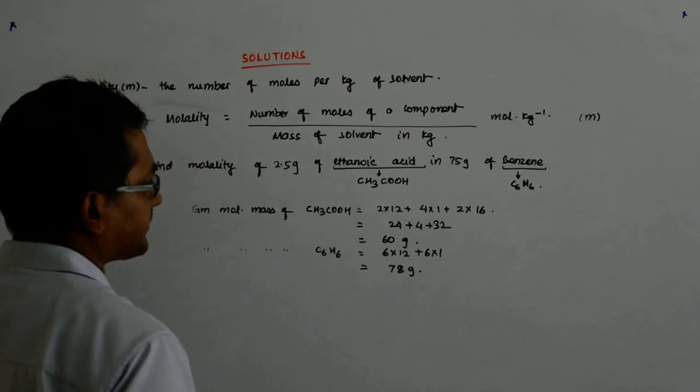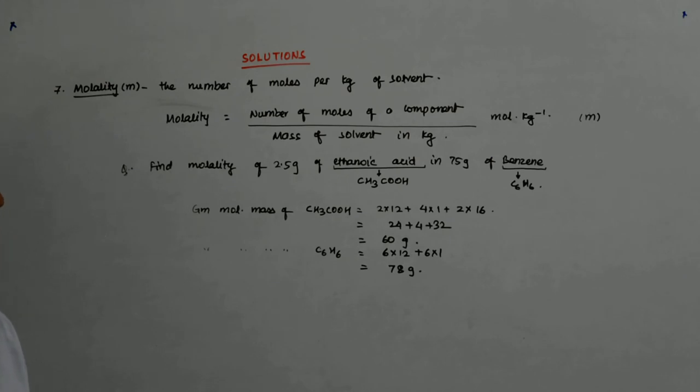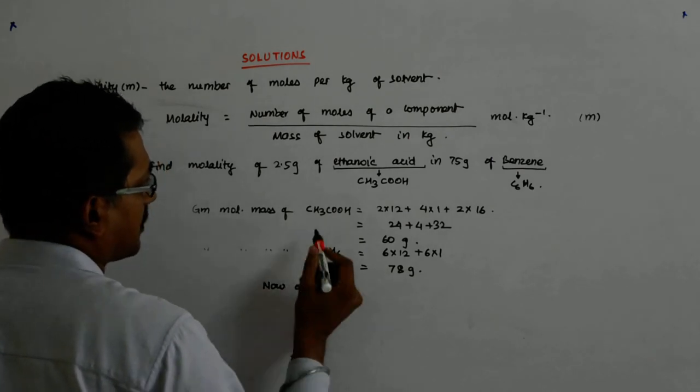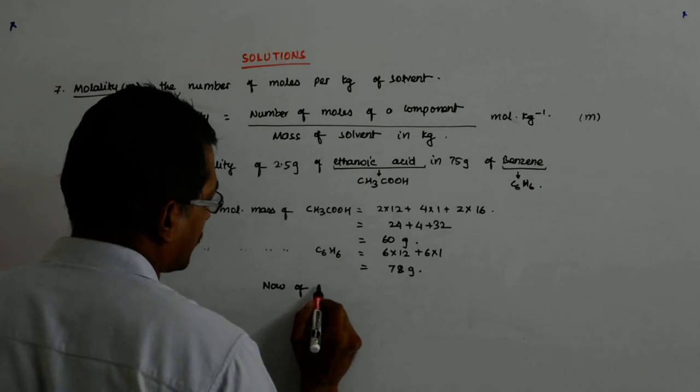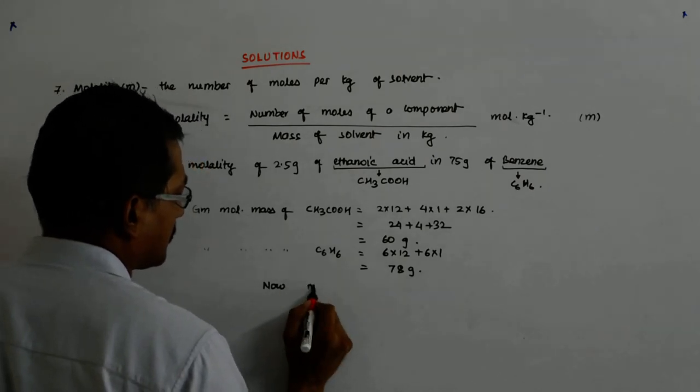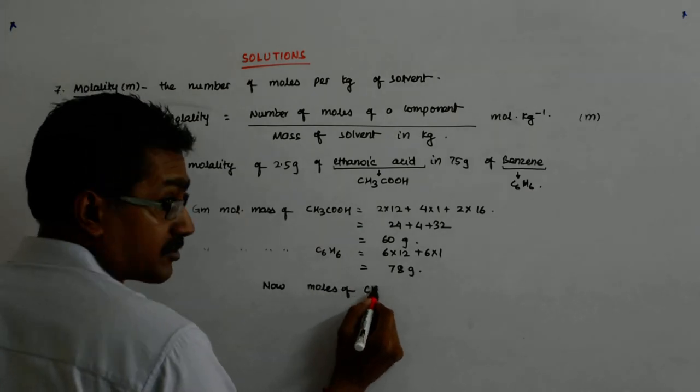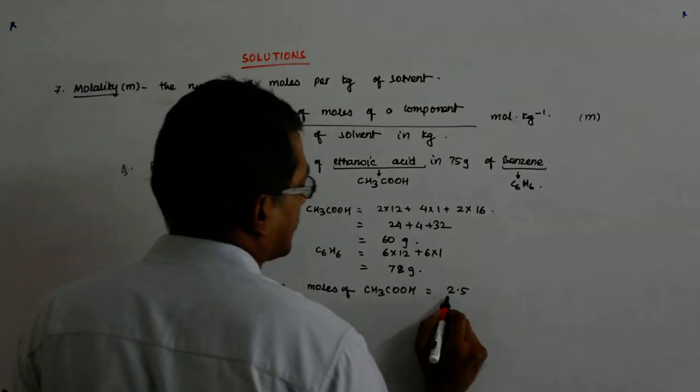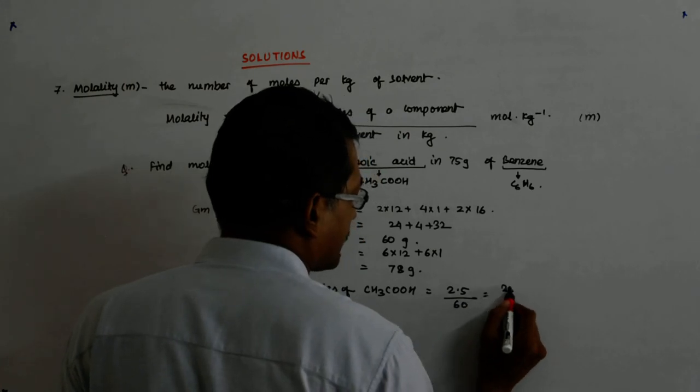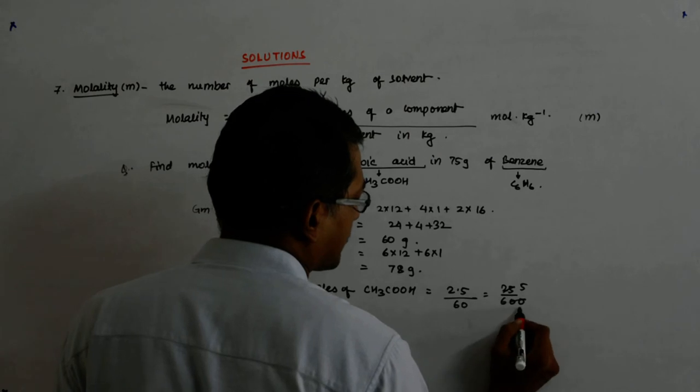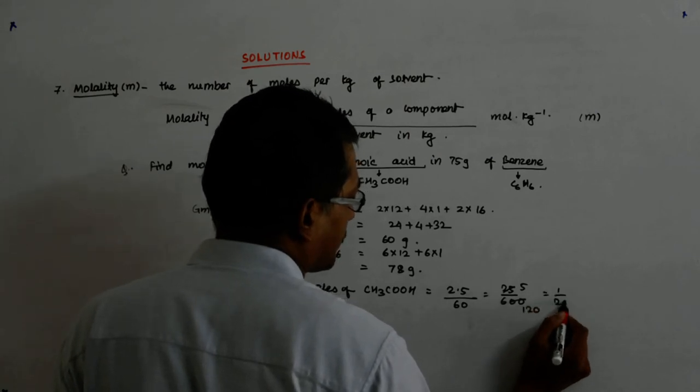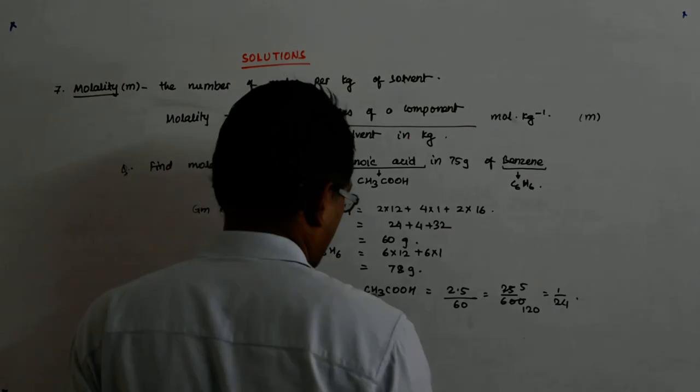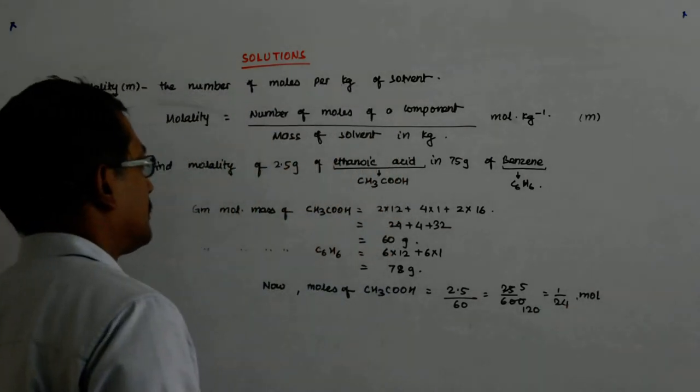We did not need to calculate the benzene. It was unnecessary. We have 75 grams of benzene. Now, moles of CH3COOH is 2.5 divided by 60. So that is 25 divided by 600. That is 1 upon 24 moles.